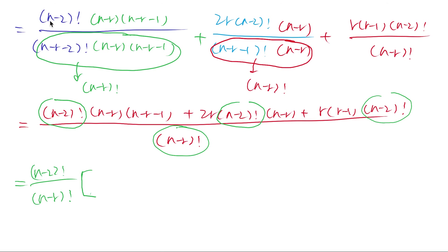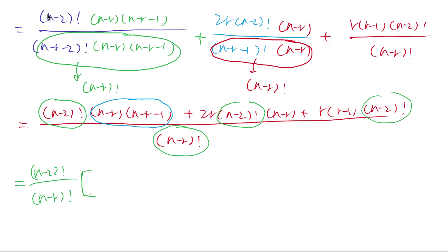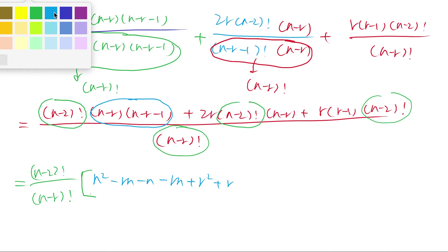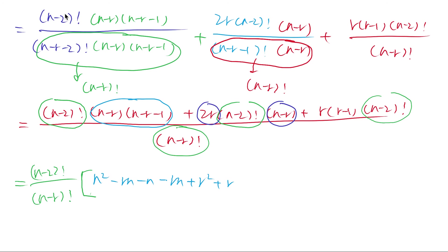Now combining the remaining terms: expanding the first bracket gives 6 terms — n squared minus rn minus n minus rn plus r squared plus r. The deep blue term gives plus 2rn minus 2r squared. The last term gives plus r squared minus r.